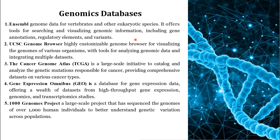Discussing the genomics databases available: the first is the NCBI database, which is one of the important databases where you will get information about genomics data with respect to vertebrates and other eukaryotic species. This database provides a platform where researchers can search for genomic information, including gene annotations, elements, and types of variants.